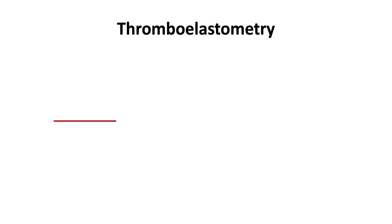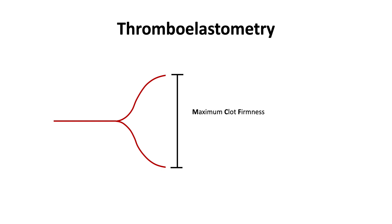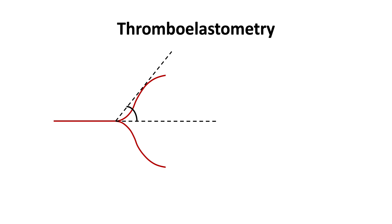At first, the pin moves freely. The resulting straight line is the clotting time, which measures the start of the assay to the first detectable clot formation at 2 mm amplitude. As clotting proceeds from an amplitude of 2 to 20 mm, this interval is called the clot formation time. Then clot formation proceeds to its maximum amplitude, the maximum clot firmness. The angle between the reaction time and the point of maximal clot formation is the alpha angle.